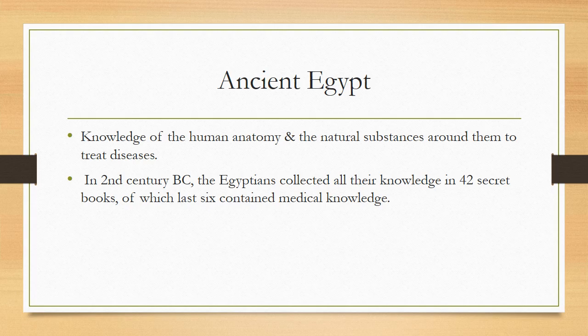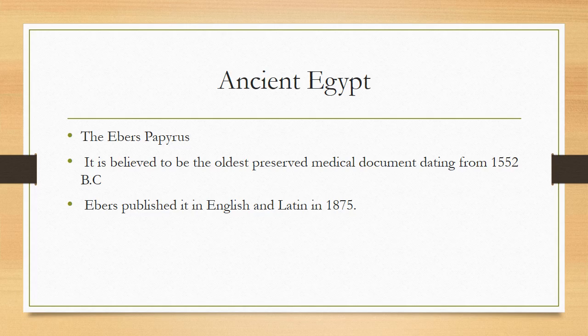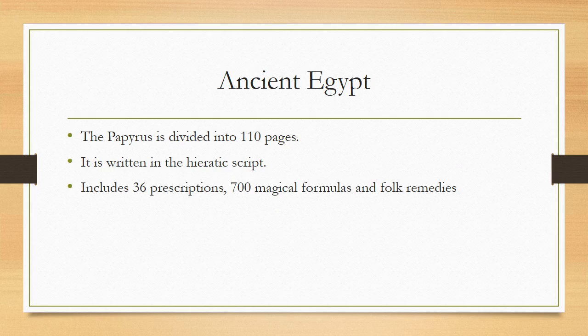Around the 2nd century, the Egyptians collected their knowledge in 42 sacred books, of which the last 6 contained medical knowledge. Their knowledge is contained in the book known as the Ebers Papyrus, believed to be the oldest preserved medical document dating from 1552 BC, published in English and Latin in 1875. That papyrus is divided into 110 pages, written in hieratic script, and includes 36 prescriptions, 700 magical formulas, and 4 remedies.